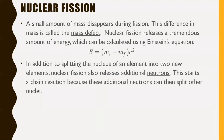A small amount of mass disappears during fission. This difference in mass is called the mass defect. Nuclear fission releases a tremendous amount of energy, which can be calculated using Einstein's equation adapted as E equals the initial mass minus the final mass times C squared. The initial mass — say uranium-236 after being struck by a neutron — is greater than the final mass of all components combined. That mass 'disappears' because it gets released as an absolutely gigantic amount of energy. In addition to splitting the nucleus into two new elements, nuclear fission also releases additional neutrons.